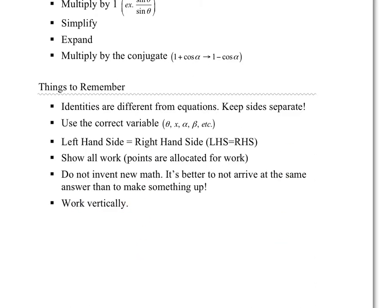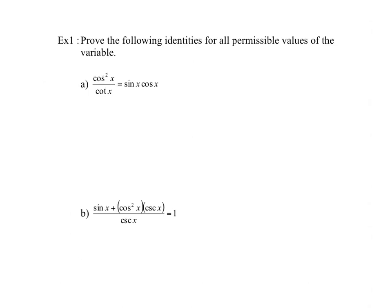Let's take a look at some identities. Our first example: we want to prove that the left-hand side is equal to the right-hand side. I'm going to start with the LHS. The left-hand side is cos squared x over cotan. Notice that I can change cotan into cos x over sine x. On the right-hand side there's not much I can do — it's already just sine and cosine. So I'll start with the left-hand side and change cotan to cos over sine. Whenever you have fractions within a fraction — numerator over denominator — it's probably better to write it in terms of a division.